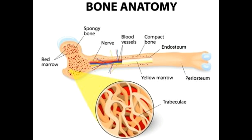Location: Compact bones make up a major part of your long bones that are present in the legs and arms. These long bones have a thick-walled structure of compact bones that enclose the bone marrow. Short bones, on the other hand, found in the ankles and wrists are mainly constructed of spongy bones. The spongy bone is also present at the end of long bones.